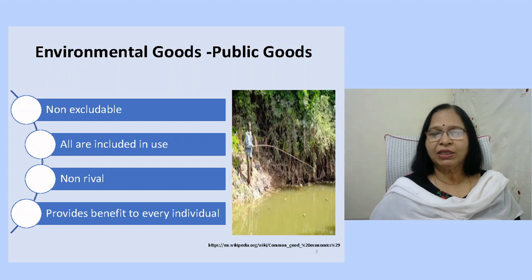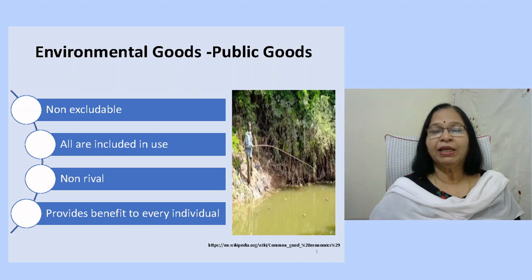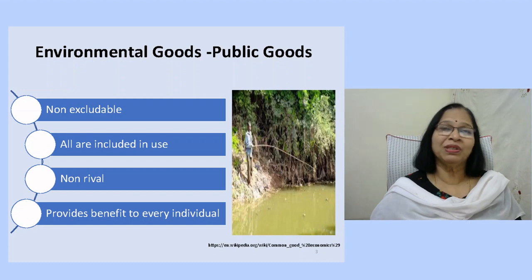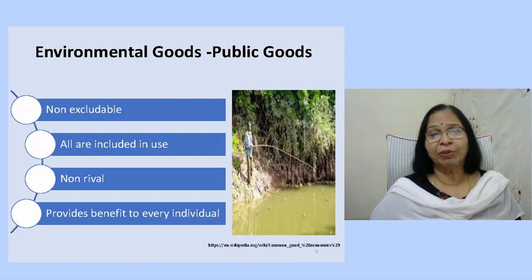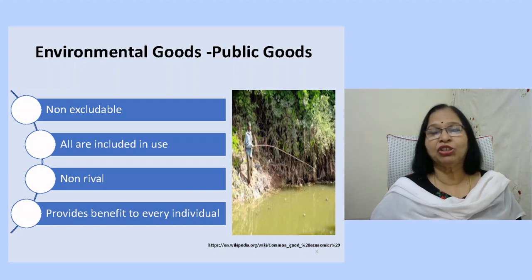To understand market failure we need to understand the nature of environmental goods. As explained in the previous video, environmental goods are both non-excludable and non-rival. This leads to the question as to who owns these environmental resources like air, ocean and habitats. Since there is a lack of clarity on the ownership of these resources, we can understand the issue of market failure from this ownership perspective.